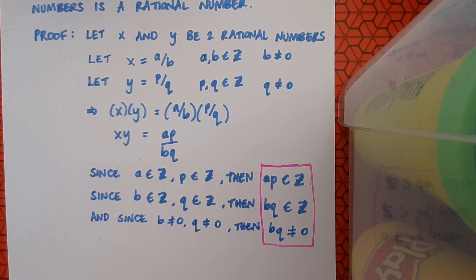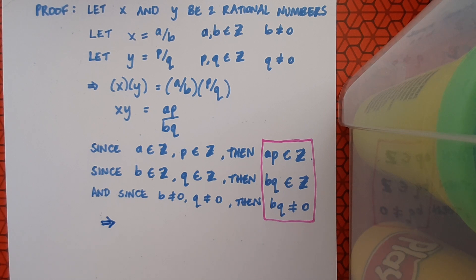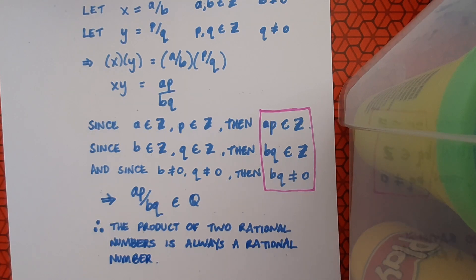So this means that my statement here for xy, ap over bq, fulfills all the criteria for rational numbers, so we can state that xy, the product of my two rational numbers, must be a rational number. So what's a nice way of writing this down? Well, I can say this implies that ap over bq is an element of the rational number set. Now can you remember the symbol that we use for the rational number set? It's Q. And then finally to conclude, we can say that the product of two rational numbers is always a rational number.